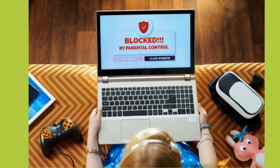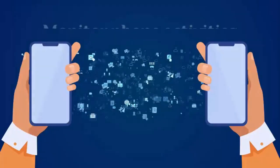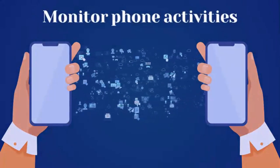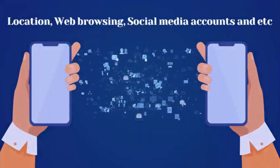To use Secure Teen as a parental control app, follow the steps. Step 1: Open the Play Store to download the Secure Teen app. Step 2: Sign up for the service by choosing the best pricing plan that suits your needs. Step 3: Once downloaded, install it on your child's Android phone. After installation, log into your Secure Teen control panel and start controlling your child's device usage and monitor all their cell phone activities such as phone calls, text messages, location, web browsing, social media accounts, etc.